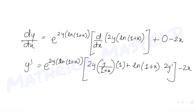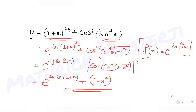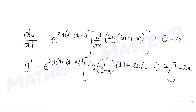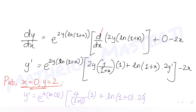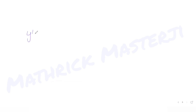To find the slope of the tangent, I need to evaluate it at the coordinate (0, 2). Instead of simplifying generally, I just substitute x = 0 and y = 2 directly. The slope y' becomes e^(2×2·ln(1+0)) times [4/(1+0) · 1 + ln(1+0) · 2y' - 2×0].